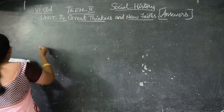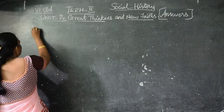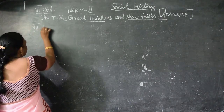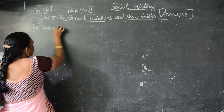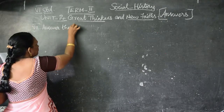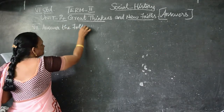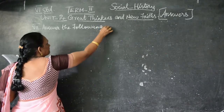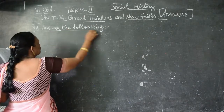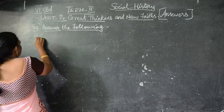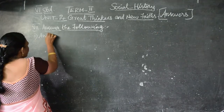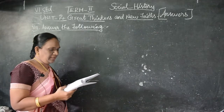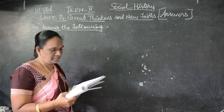Answer the following — that is Roman numeral 7. First question: Name the 8-fold path of Buddhism.